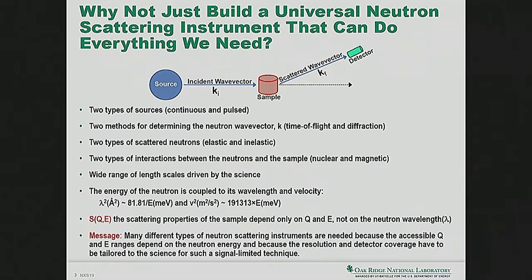When I say signal-limited, I mean the number of neutrons that reach the detector is far, far less than the number of photons that reach the detector in an x-ray experiment. You have to really optimize everything and make as much use as you possibly can of every neutron coming from the source.